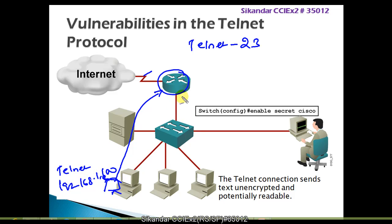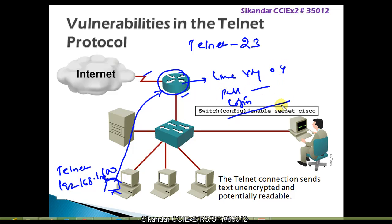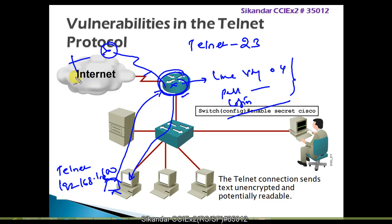The router has been pre-configured with a specific password and the login command has been created. Once the configurations are set and you have connectivity between the two devices and know the IP address, you can establish a remote connection to your device — from the LAN or the WAN — even if the router is in a different location.